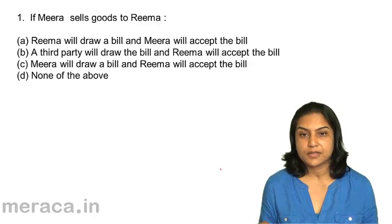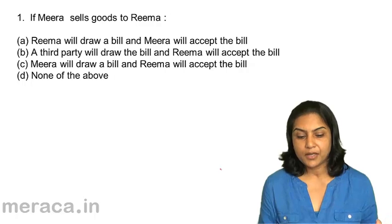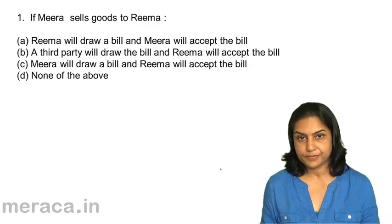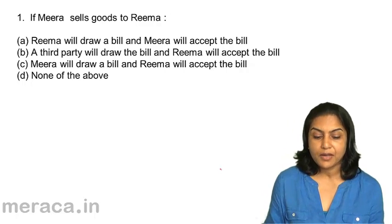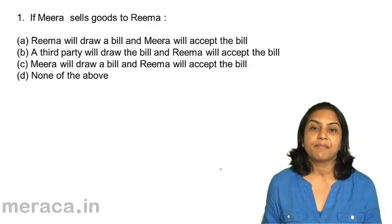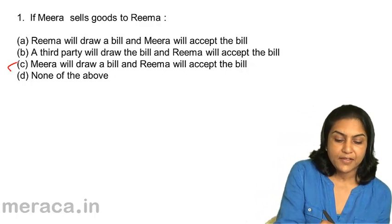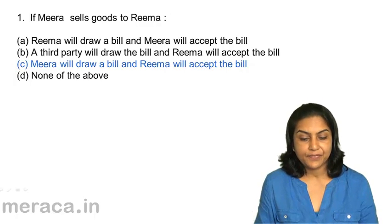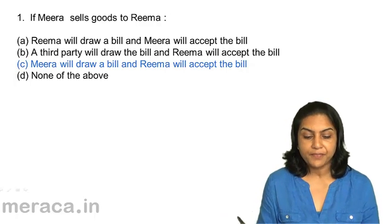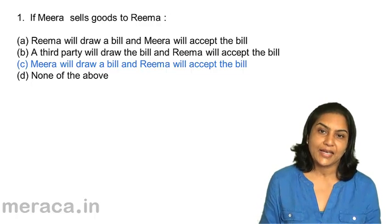If Meera sells goods to Rima, who will draw the bill and who will accept the bill? Meera will draw the bill and Rima will accept the bill, since Rima has to make the payment. Therefore, option C should be correct — Meera will draw a bill and Rima will accept the bill.